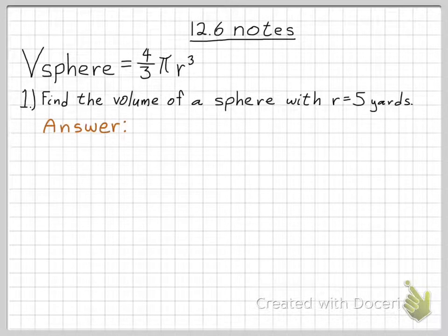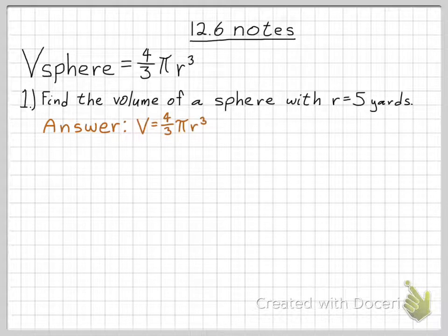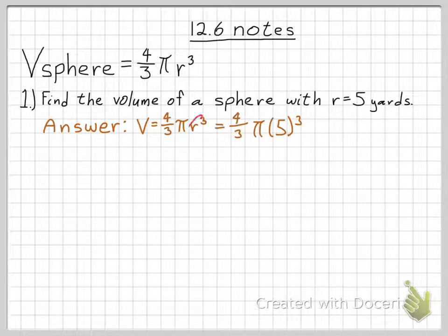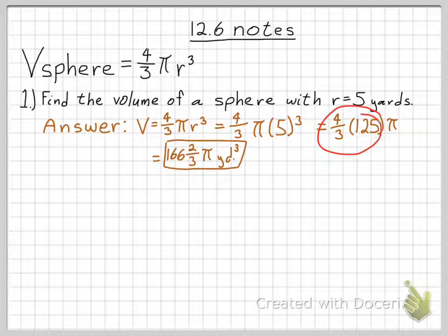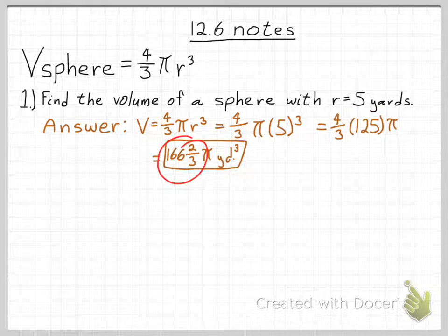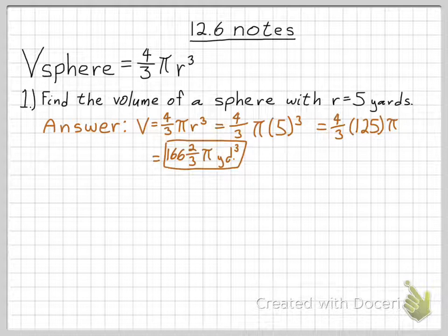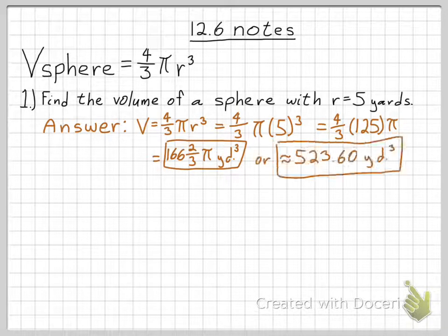The answer is, well, let's write down the formula again. Volume of a sphere is 4 thirds pi r cubed. That's 4 thirds pi times the radius cubed. The radius is 5, so that's where I get the 5 from. And then 5 cubed is 125, so I'm just working this out now. And then 4 thirds of 125 is 166 and 2 thirds pi cubic yards.